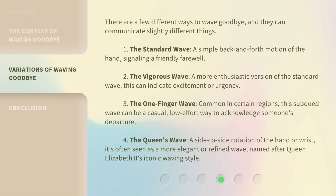There are a few different ways to wave goodbye, and they can communicate slightly different things. First, the standard wave: a simple back-and-forth motion of the hand, signaling a friendly farewell. Second, the vigorous wave: a more enthusiastic version of the standard wave. This can indicate excitement or urgency.